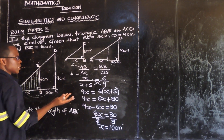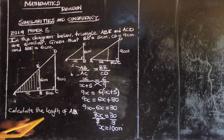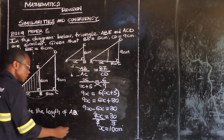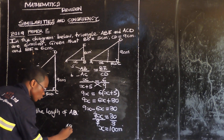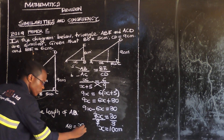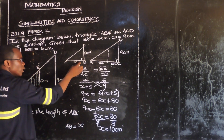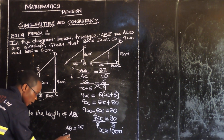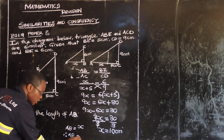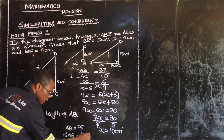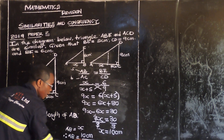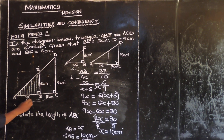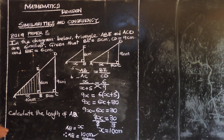Since we want AB, not just X — remember X was representing AB — therefore AB is equal to the value of X, which is 10 centimeters. So our AB is 10 centimeters.